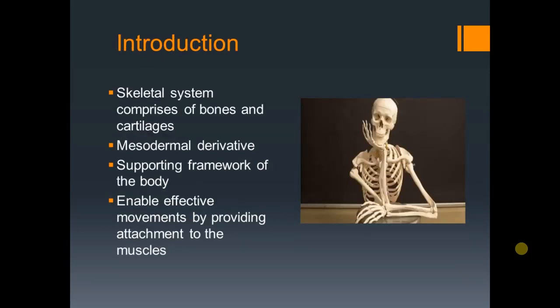We all know that when we think of the skeletal system, what comes to mind is bones. Even though this is true, bones constitute only about 90% of our skeletal system and the remaining 10% is made up of cartilages. Whether it is bone or cartilage, both are connective tissue types and are derived from mesoderm — one of the three germ layers, the other two being ectoderm and endoderm. Condensation of the mesoderm gives rise to bones and cartilage.